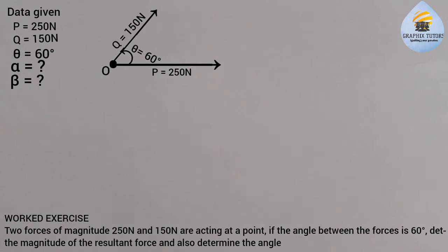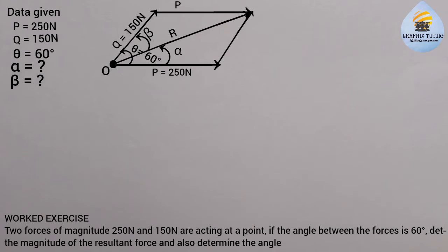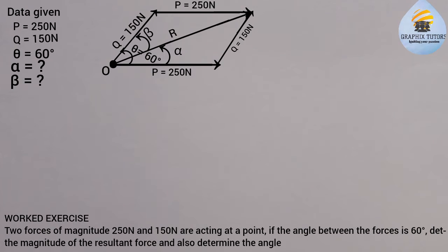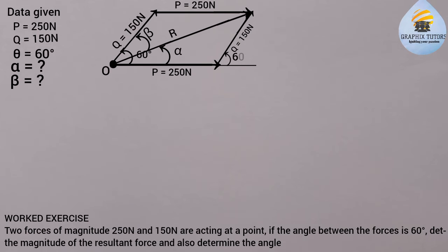If we allow these two forces to be represented by the two adjacent sides of a parallelogram, this is what we get. The opposite side is parallel to P and also equals 250 Newton, and the other opposite side is parallel to Q and also equals 150 Newton. Extending the line, the angle between this force and this line is also 60 degrees — by corresponding angles, whatever angle is here will also appear here.